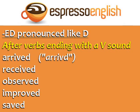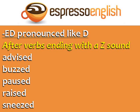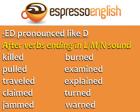ED is also pronounced like D after verbs ending with a V sound. ED is pronounced like D after verbs ending with an L, M, or N sound.